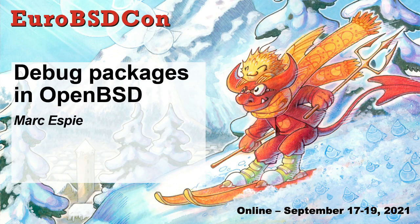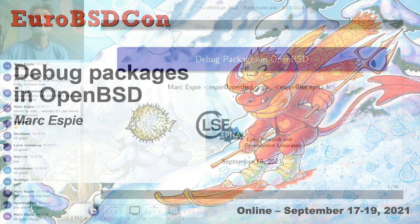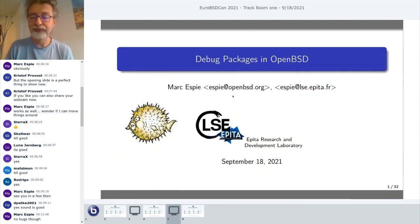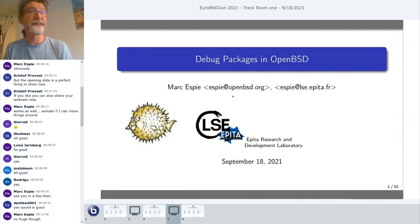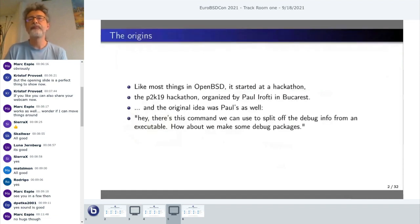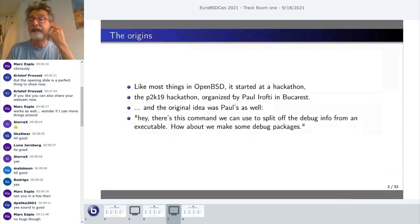It's great to be back, except that we are not really back of course, but we are going to have to do things this way this year. I'm going to talk about how we set up debug packages in OpenBSD. It's somewhat old work by now — I was supposed to present this last year at EuroBSDCon, which didn't happen obviously, so I'm doing this from memory. I hope I didn't forget too many details.